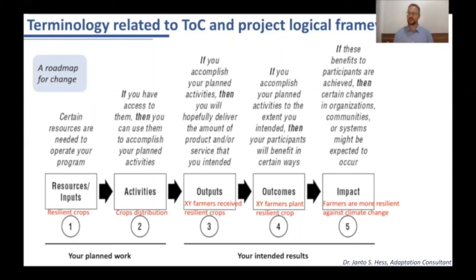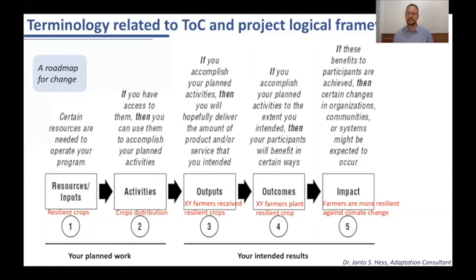It is more that you can say, for example, one thousand farmers were delivered the crops. How they use the crops is not yet clear — this will be more defined in the outcomes, where you can say those farmers planted resilient crops. And the impact of this simplified logic would be that you hope through the distribution and plantation of the crops, the farmers will become more resilient to climate change.